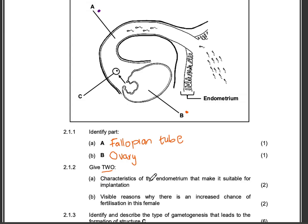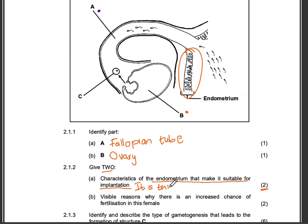Give two characteristics of the endometrium that make it suitable for implantation. Remember, implantation is when the blastula or blastocyst embeds itself into the uterine lining to confirm pregnancy. The marker allocation is two marks. You can say the endometrium is thick — to house the growing fetus — you can also say it is glandular, and you can also say it is vascular, meaning it has a rich blood supply. They've asked for two, so just answer two.